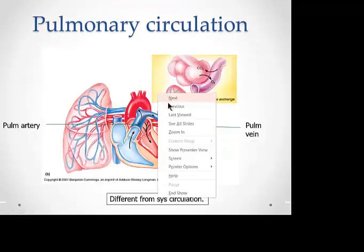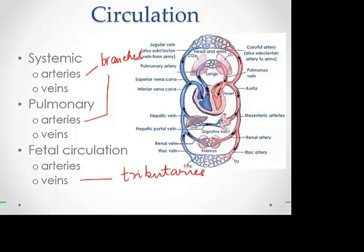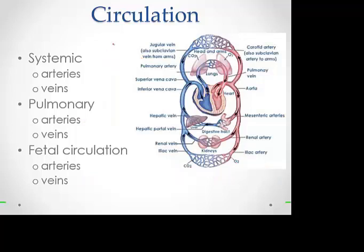Important terminology: arteries have branches everywhere. Veins have what are known as tributaries. We also use the word 'drain' — where does this vein drain, or what drains into this vein? For example, using a road analogy: just as Ulmerton Road branches off US-19, we would say Ulmerton is a branch of US-19. Similarly, Starkey is a branch of Ulmerton, and Brian Dairy is a branch of Starkey.